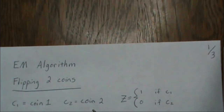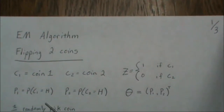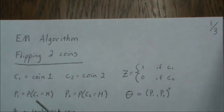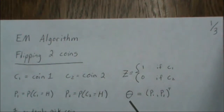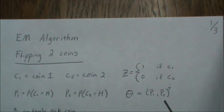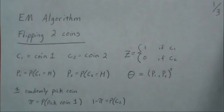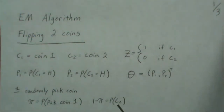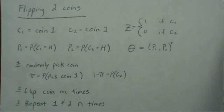We're going to have two coins. Z is an indicator variable: 1 if it's coin 1 and 0 if it's coin 2. P1 is the probability of a head on coin 1, and P2 is the probability of a head on coin 2. The parameter set is P1, P2, and pi. We randomly pick a coin, and pi is the probability that we pick coin 1; 1 minus pi is coin 2.